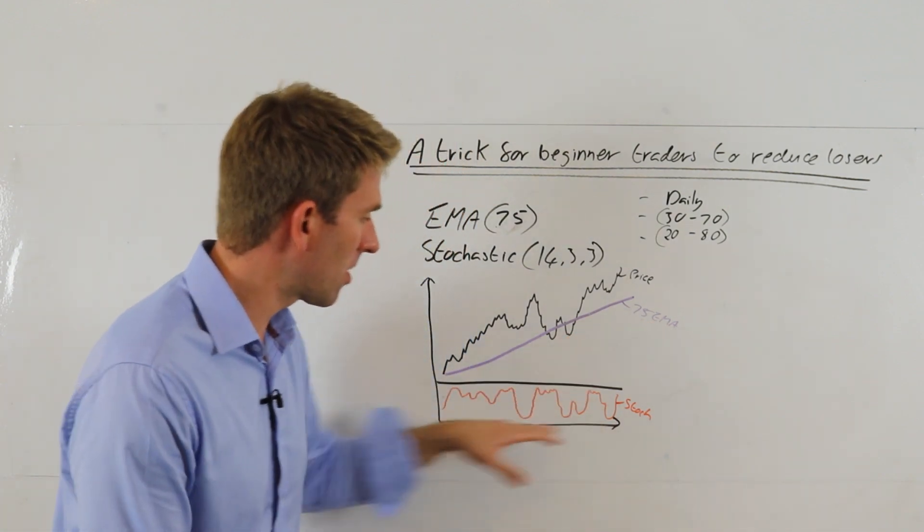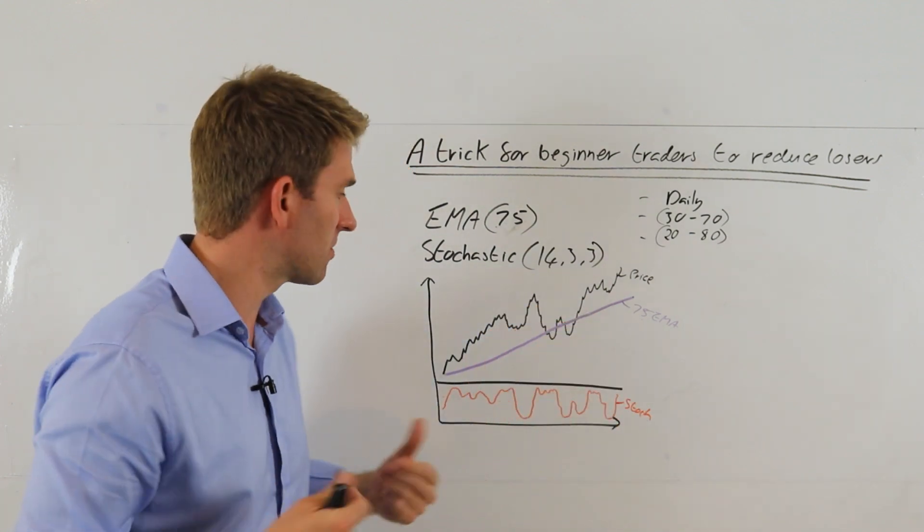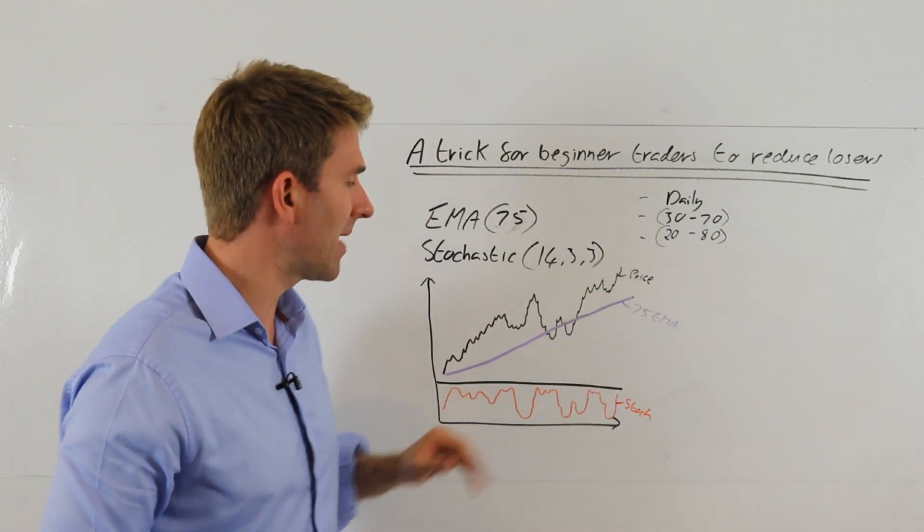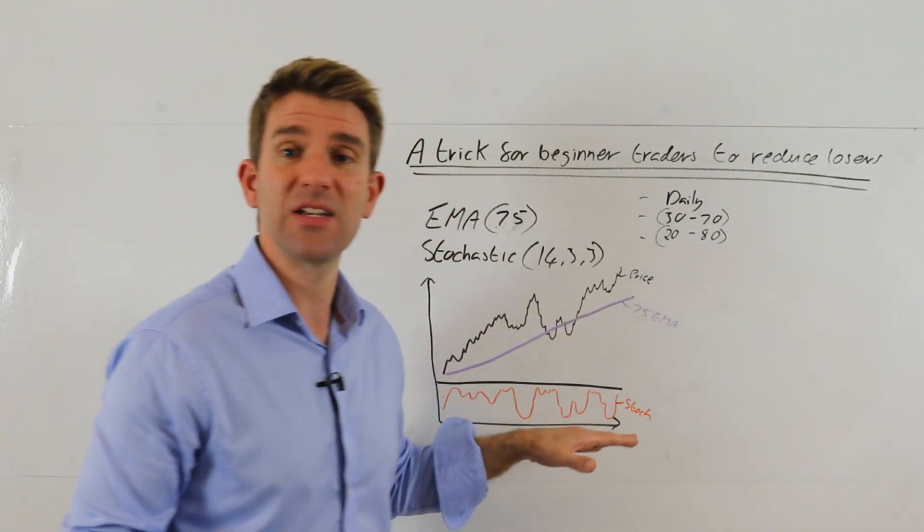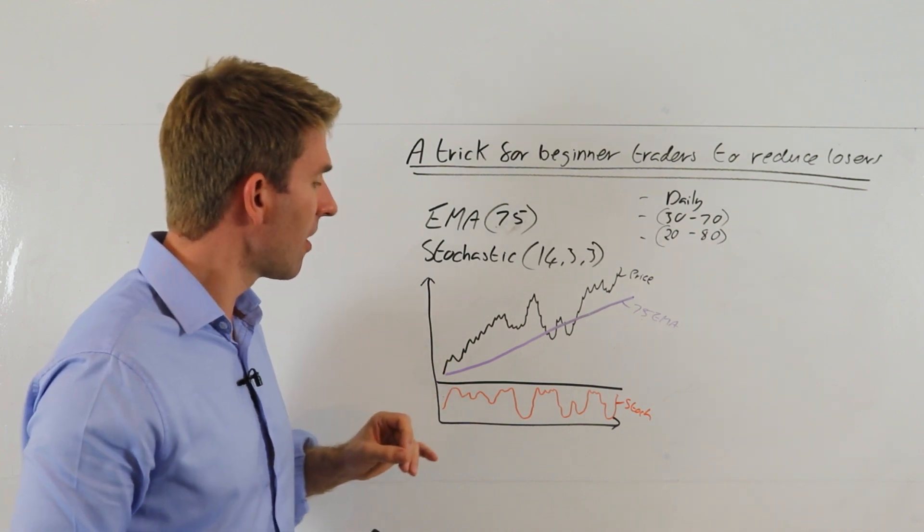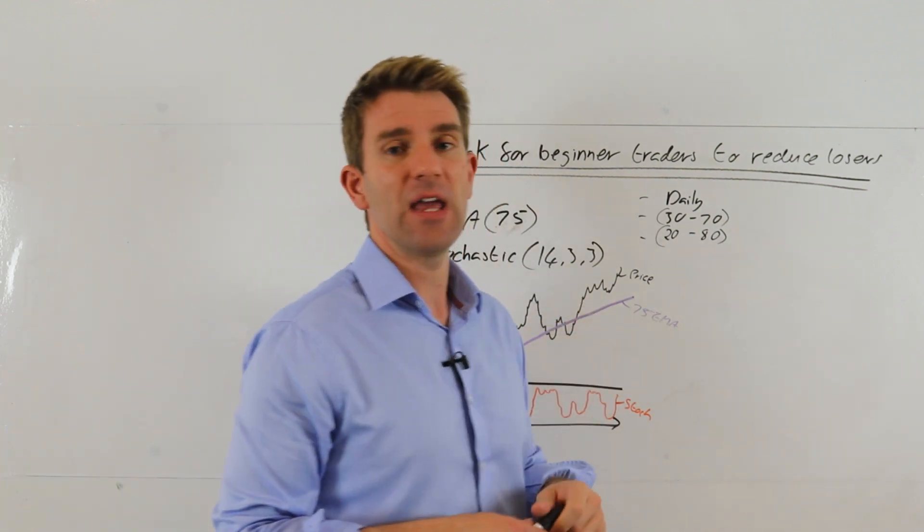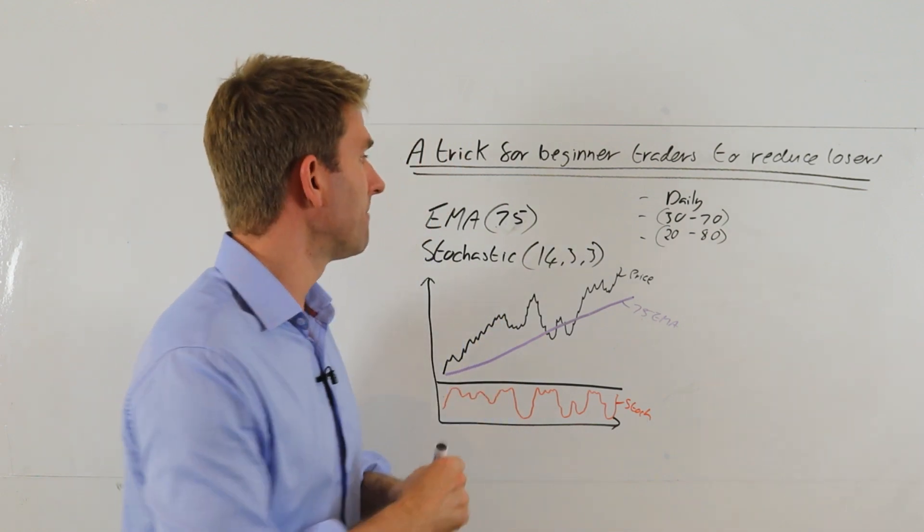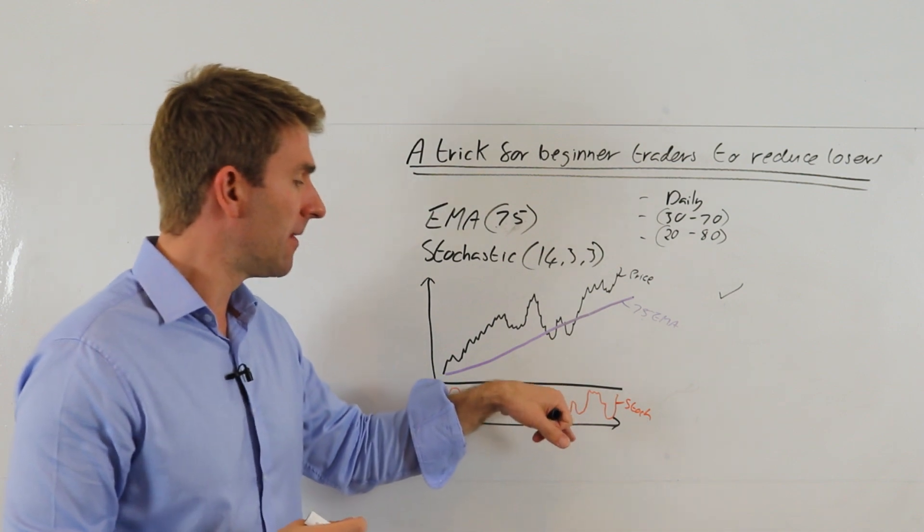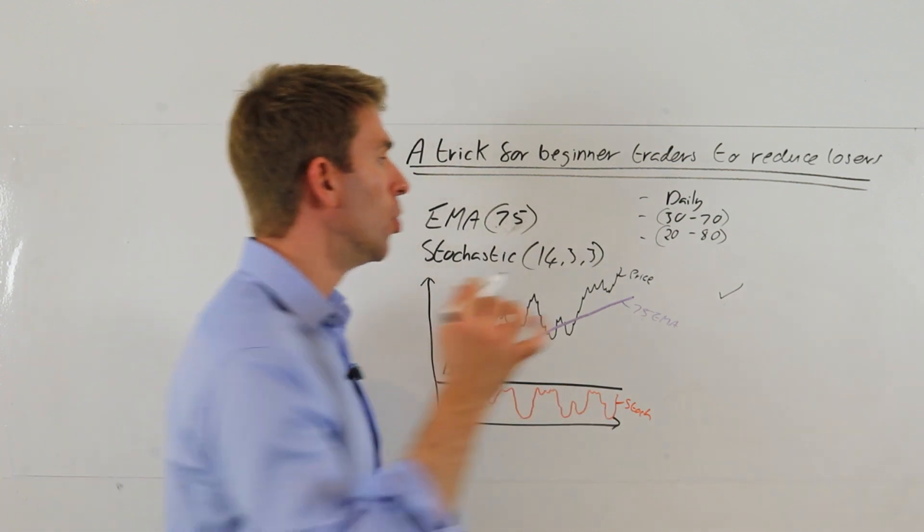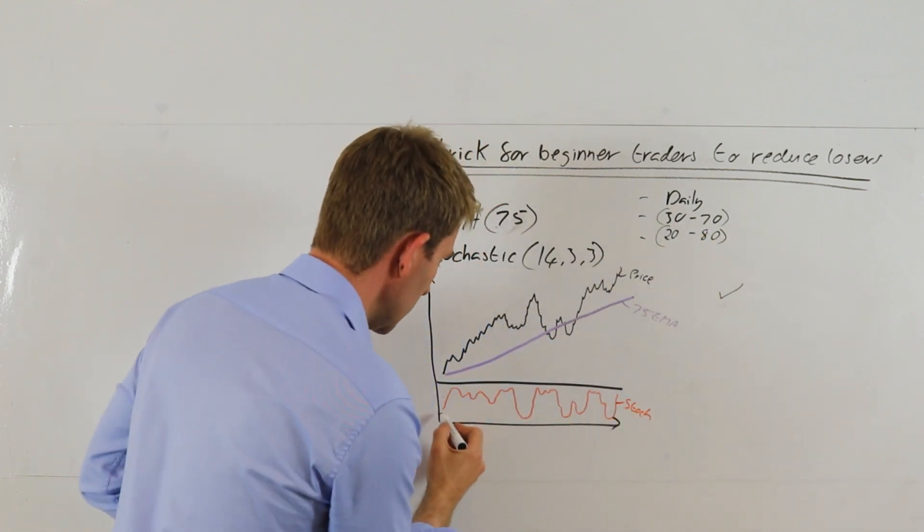We put our stochastics down here, generally speaking, at the bottom of your chart for ease of comparison. And here's price here in black. So purple is our moving average, our price is in black, and stochastics is in orange here in this chart. The rules are this: when price is above the 75 period EMA, that's a first filter tick. So price is above—we have one tick.